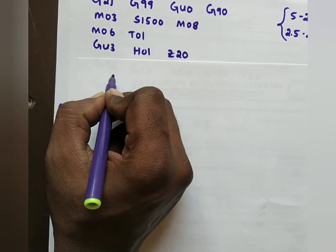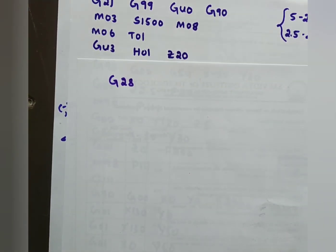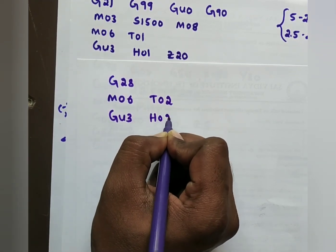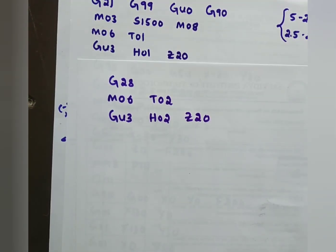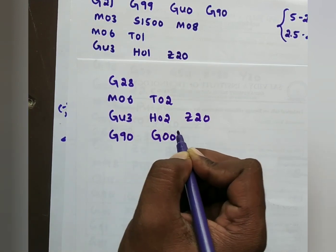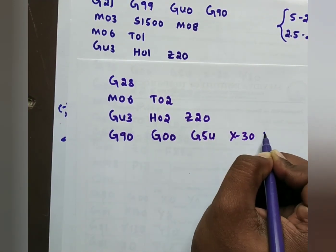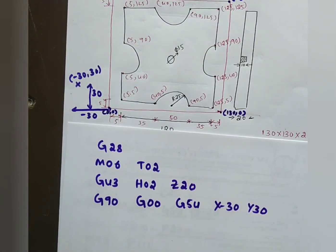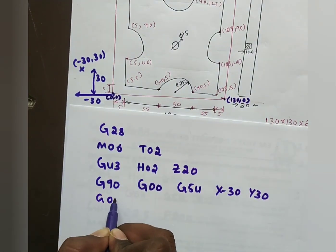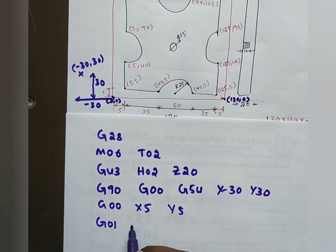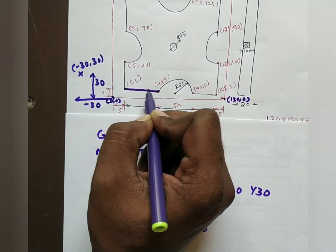After facing, send the tool home using G28 before changing tools. Select second tool: M06 T02. Define tool length: G43 H02 Z20. Choose reference point: G90 G00 G54 X-30 Y30. Move tool to X5 Y5 using G00, then give depth G01 Z-5 at feed rate 200 mm/min for profile milling.